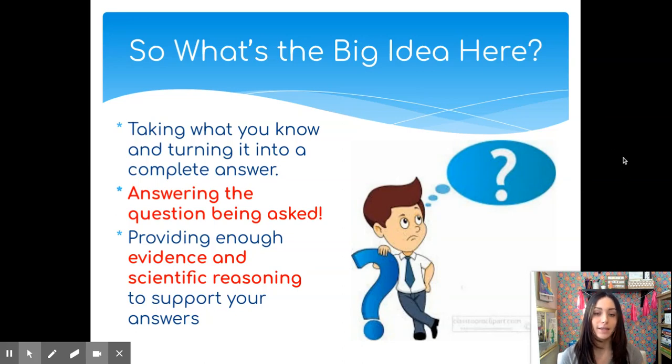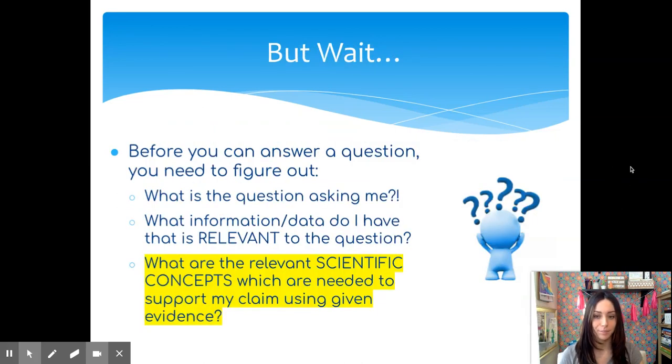Today, we're going to look at the CER or claim evidence reasoning method of writing a scientific argument. Before we start to write a scientific argument or answer any question, there are some things that we want to make sure that we are doing. Before we can answer the question, we want to make sure that we are very clear on what we're being asked. In order to truly answer the question, you need to know what the question is. You need to take the time to stop and say, what am I being asked here?